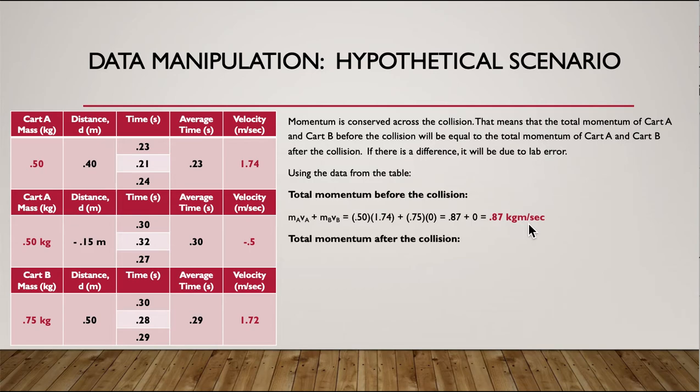We're going to do the same thing looking at the momentum after the collision. After the collision is this number for A, this number for B. So, mass of A is the same, it hasn't changed. Velocity of A is negative 0.5, which I get from right there.